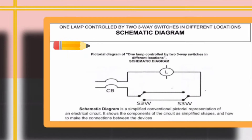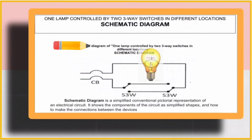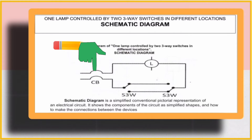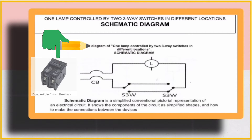The interpretation of this diagram is one lamp controlled by two three-way switches in different locations. The first picture shows a schematic diagram. A schematic diagram is a simplified conventional pictorial representation of an electrical circuit. It shows the components of the circuit as simplified shapes and how to make the connections between the devices. Meaning, a schematic diagram is a graphical representation of an object using electrical symbols rather than using actual images of an electrical device.